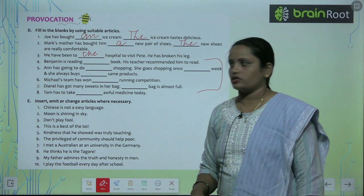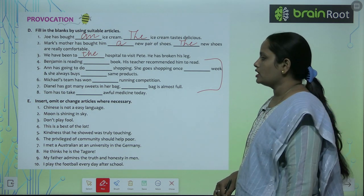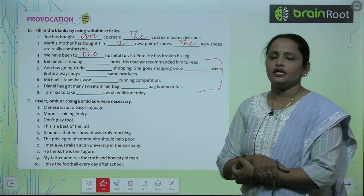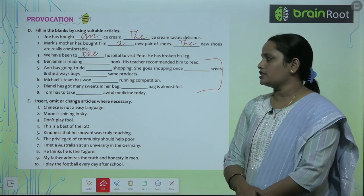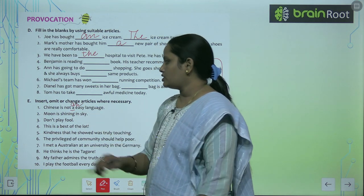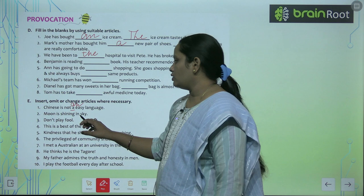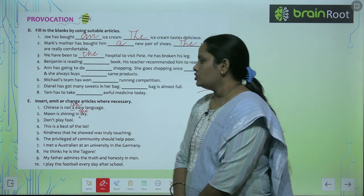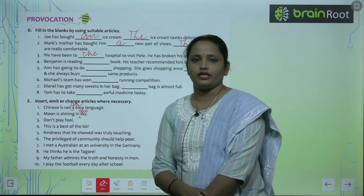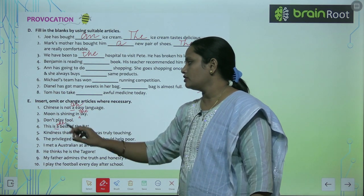Exercise E: Insert, omit, or change the article where necessary. 'Chinese is not a easy language' — An easy language. 'Moon is shining in sky' — in the sky. 'Don't play fool' — nothing to change, this is correct. 'This is a best of the Lord' — change A to The: the best of the Lord. Complete questions 5 to 10 similarly.